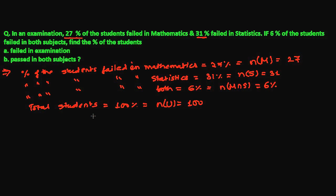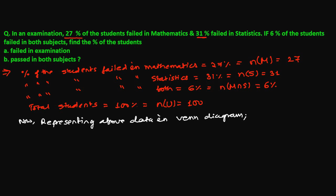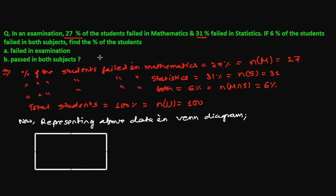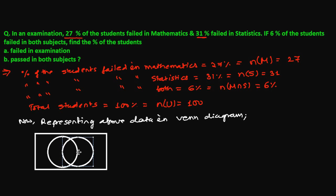Now the second punch we need to give to this question — representing this into the Venn diagram. To draw a Venn diagram, first we need to make a rectangle. This is my mathematics and this is my statistics. This is U, this is Math, this is Statistics.